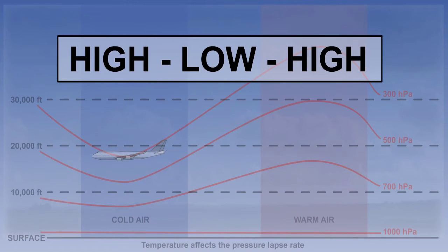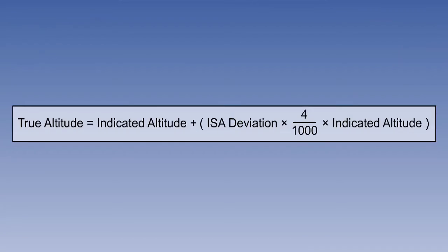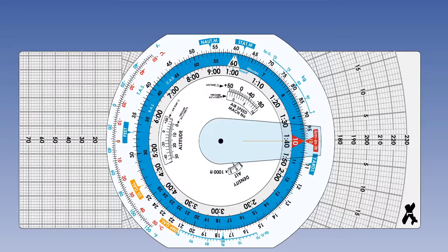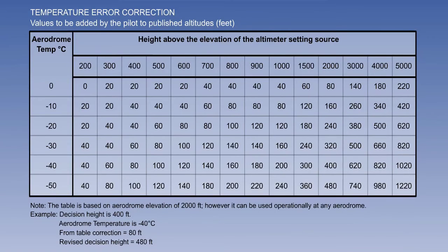When flying from an area of low temperature to an area of high temperature, the reverse applies and the pressure altimeter will under-read. There are three main methods of establishing temperature error so that we can work out a safe indicated altitude in order to ensure that we are at or above a required true altitude. The first is a calculation based on a formula, the second is the navigation computer, and we can also use tables, particularly for the decision height or decision altitude case.